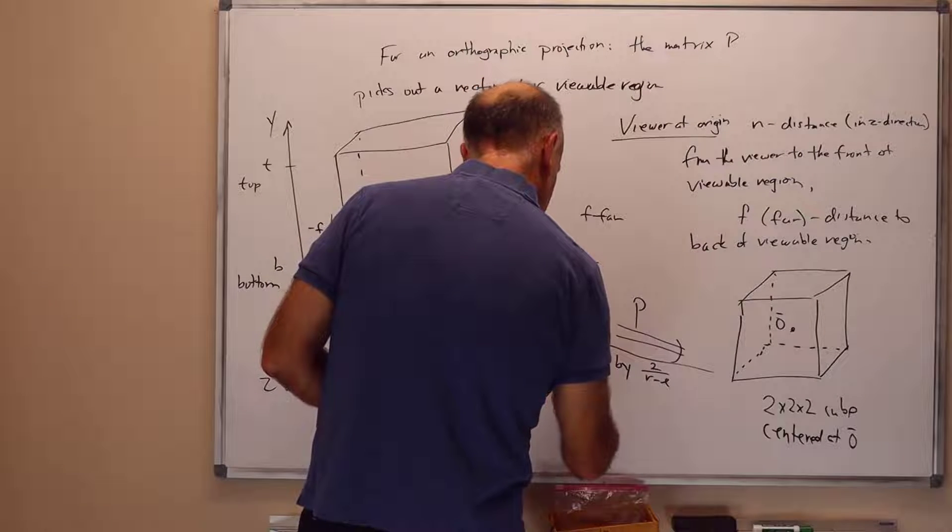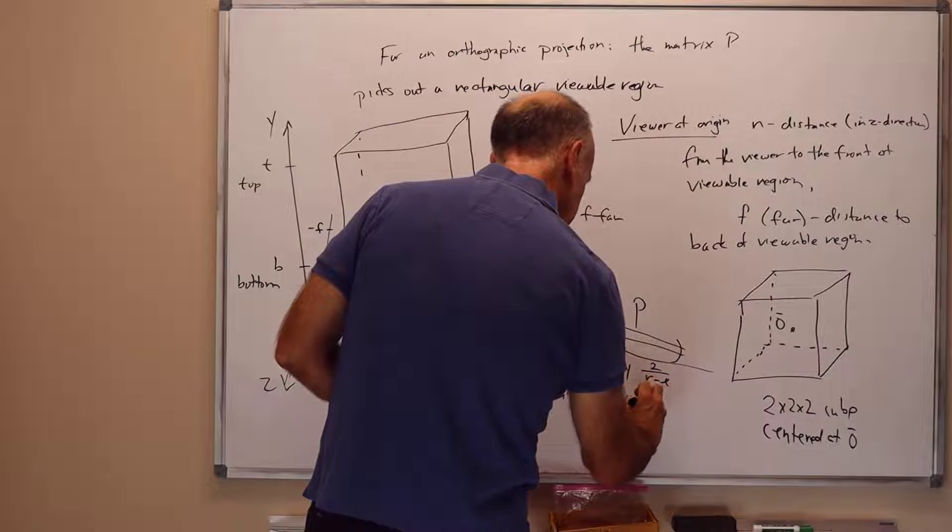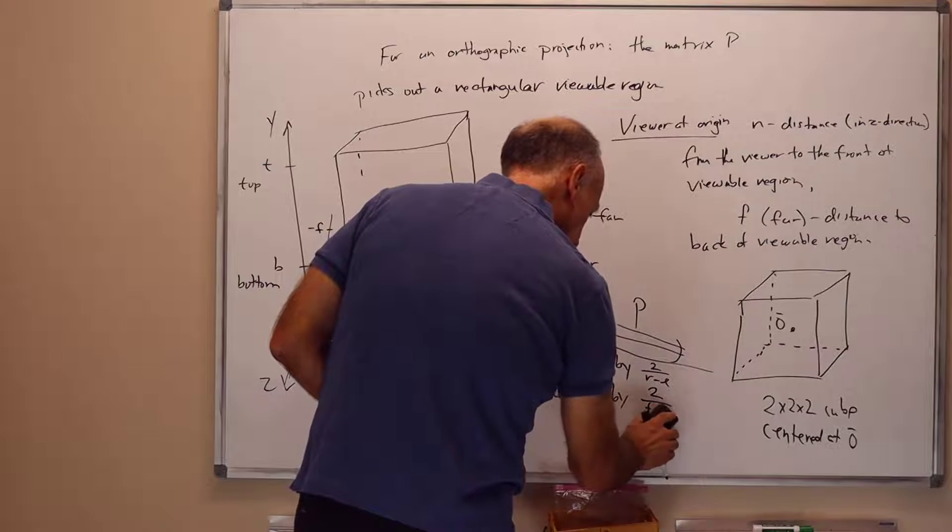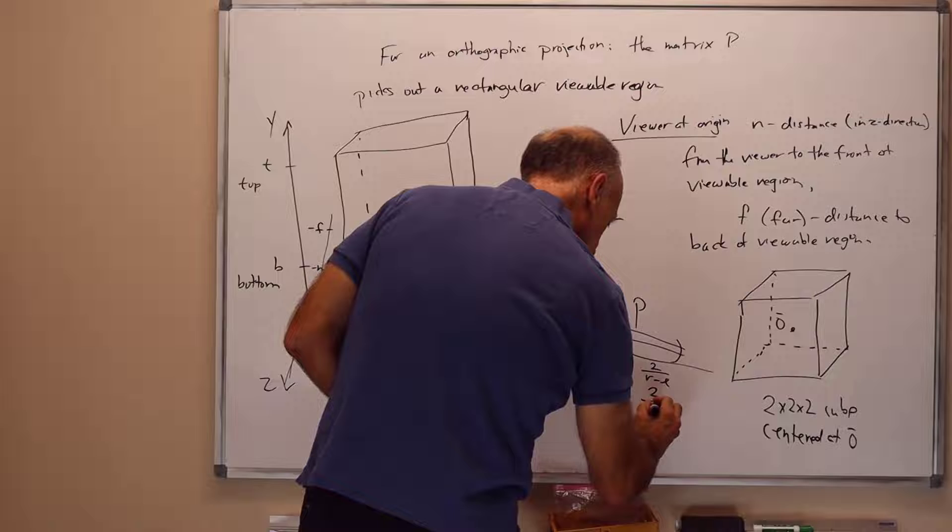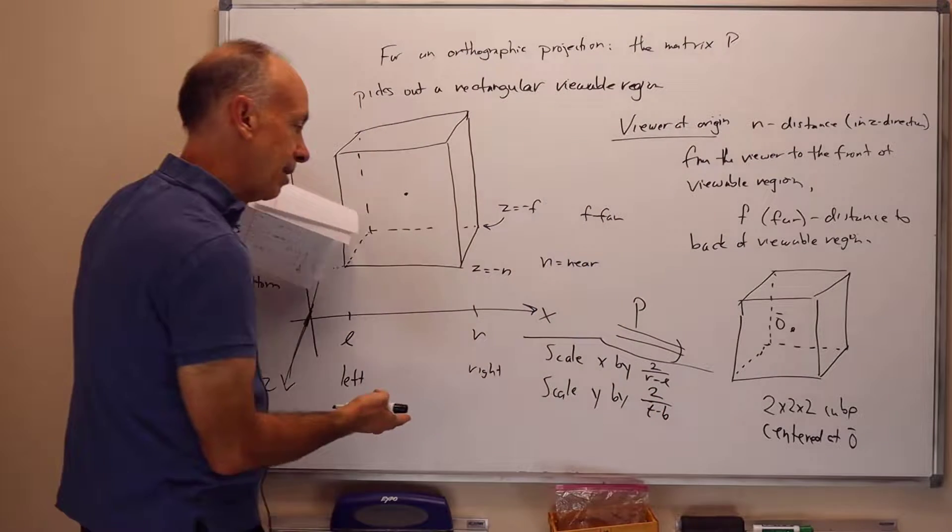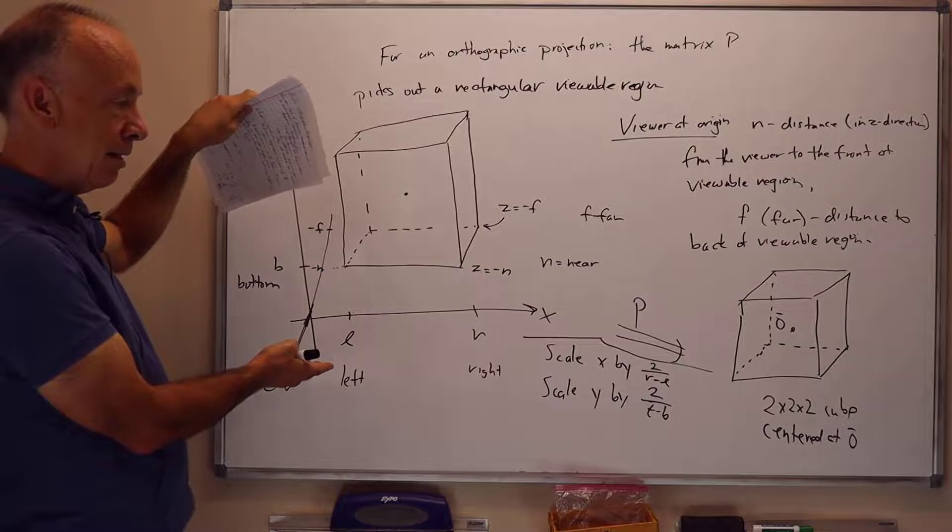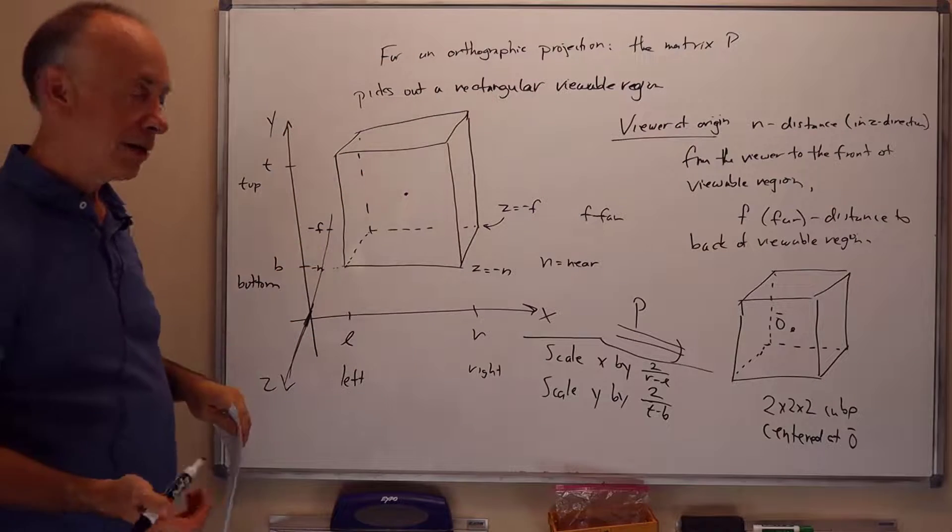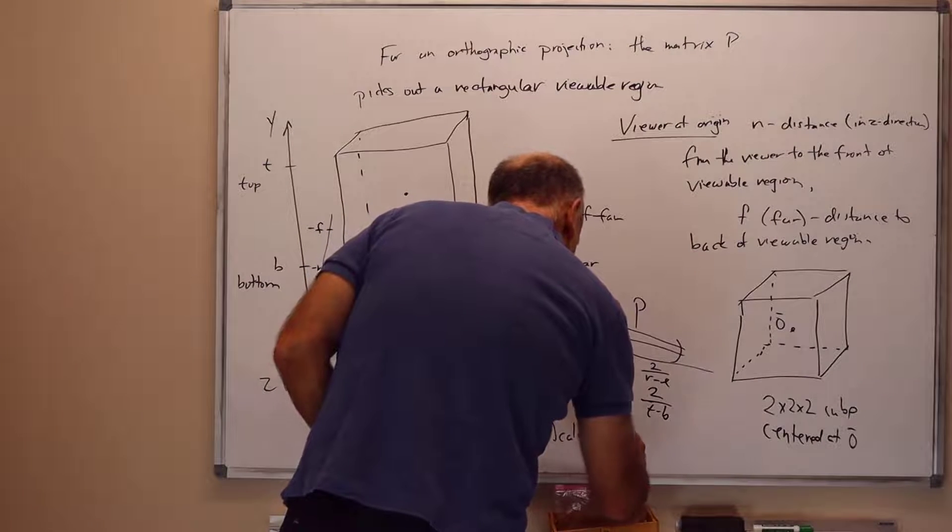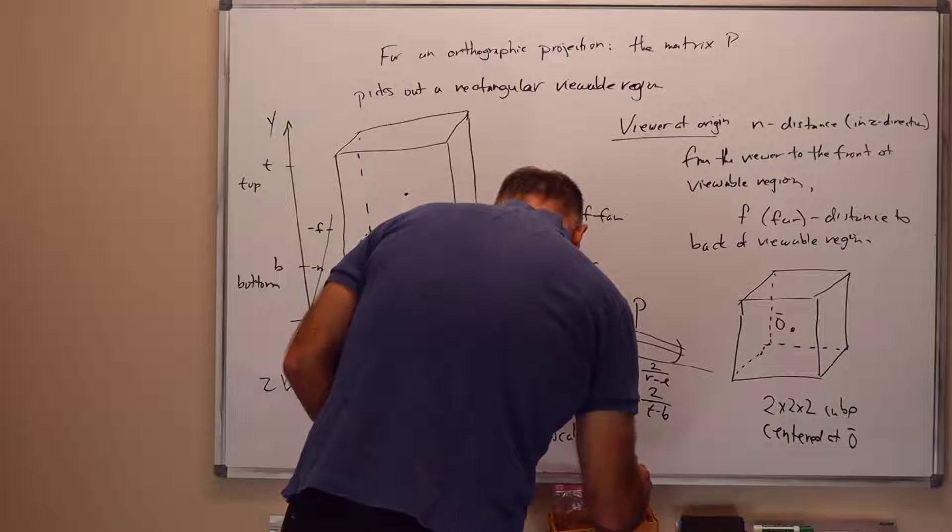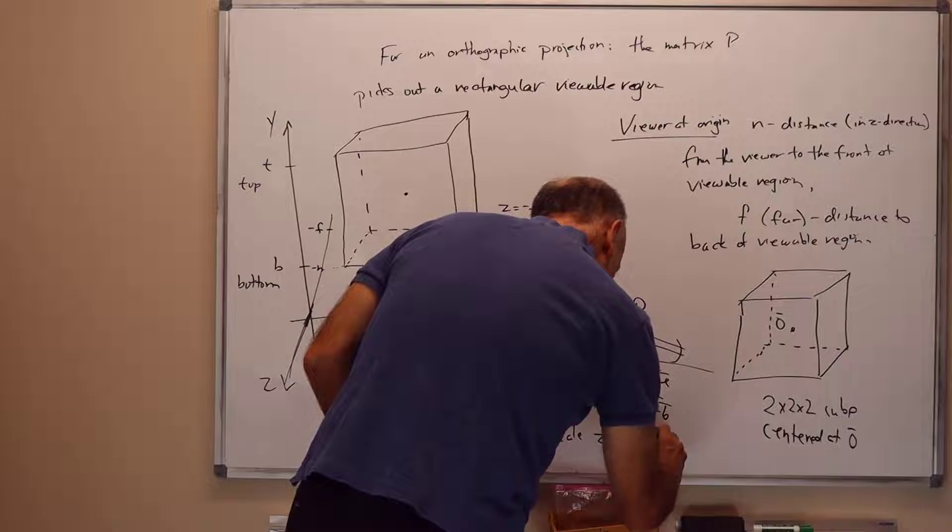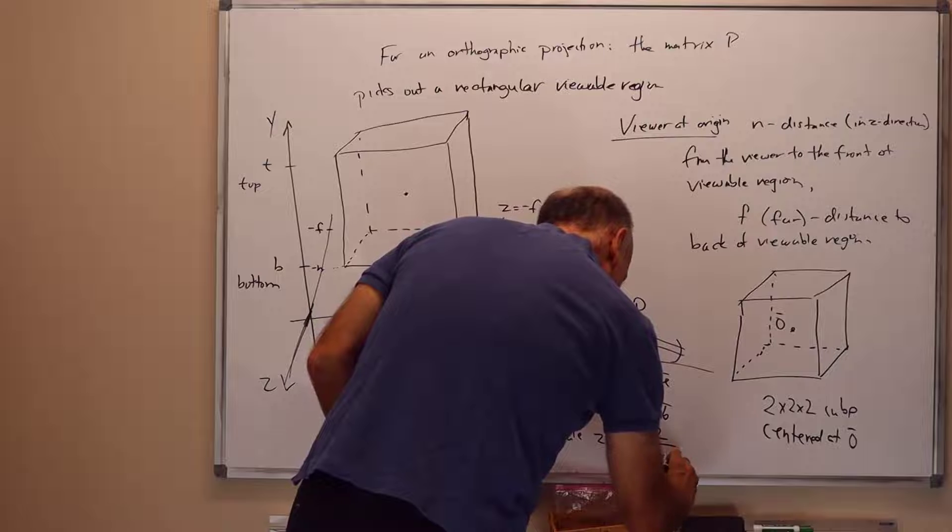Because in the cube we're looking at, the width between x values goes from l to r, thus total distance r minus l. In the target cube, we're mapping into a 2 by 2 by 2 cube, so we have to scale by 2 over r minus l. We'll scale y by 2 over t minus b. And this is because the cube has height that we're viewing, has height t minus b, and we're mapping it down to a cube of height 2.